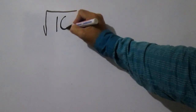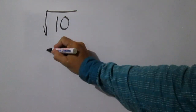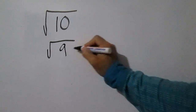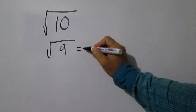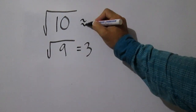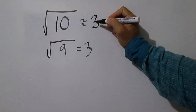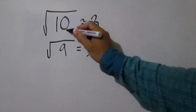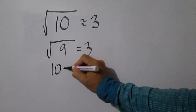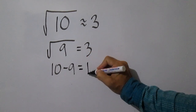Square root of 10. The closest perfect square less than 10 is 9, and the square root of 9 is 3. 10 minus 9 equals 1.